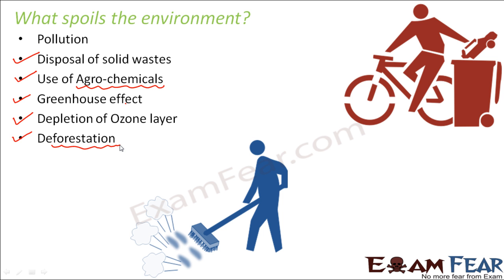These are some of the factors which are spoiling the environment and which have proven to be environmental issues today. In this lesson we are going to talk about each of these factors in detail — we will see how they affect the environment, how exactly they can be controlled, and what causes each of them, like what causes pollution or what makes solid waste disposal a problem. We will look at their cause, their effects, and their control — that is the agenda of this lesson.